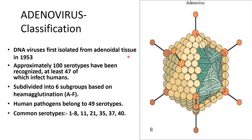Adenovirus was isolated from adenoidal tissue in 1953. Approximately one hundred serotypes have been recognized, at least 47 of which are able to infect humans, subdivided into six subgroups based on hemagglutinization — that is from A to F. Human pathogens belong to 49 serotypes.